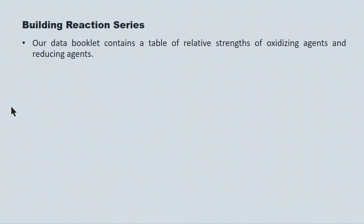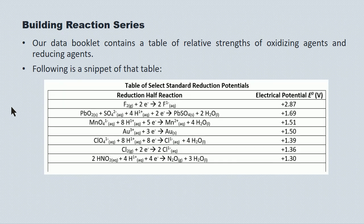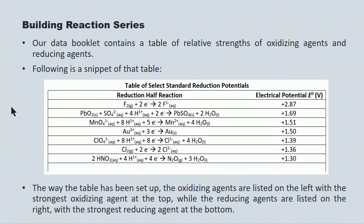Your data booklet contains a table of relative strengths of oxidizers and reducers. It's called a standard reduction potential table. Here's a small snippet from a similar page. The way the page is organized, the oxidizing agents are listed on the left and the strongest oxidizing agent is at the top. On your table, the strongest oxidizing agent listed is fluorine gas.